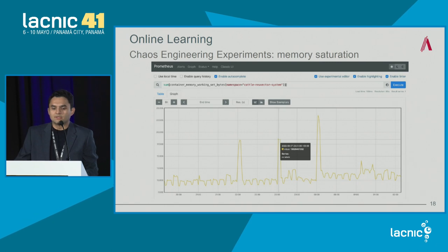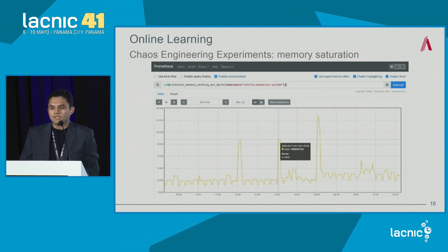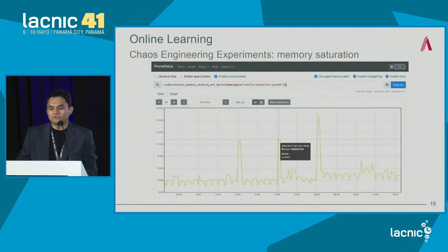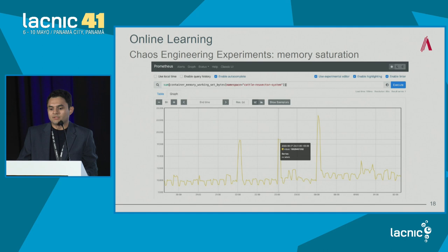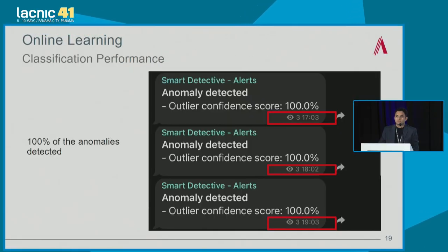Based on chaos engineering, we defined different experiments, one of which was memory saturation. An exhaustive use of resources can lead to trouble within a company. We ran this experiment at different times — every hour, every five minutes, and randomly — attacking different spots. The pipeline should detect the anomaly, and as shown on screen with three peaks at three different times, 100% of the anomalies were detected in real time. We received a warning via Telegram at 5, 6, and 7 in the afternoon.